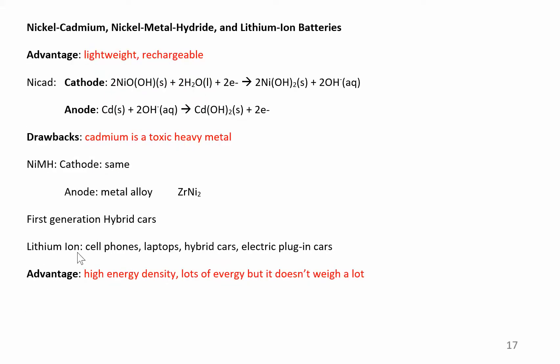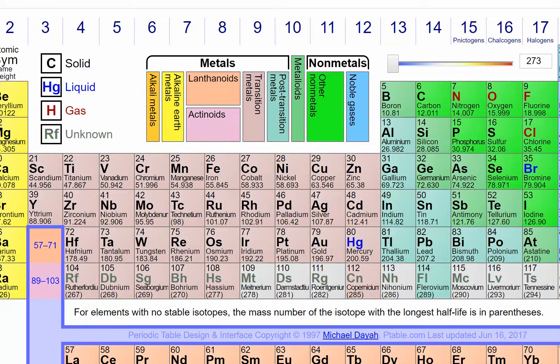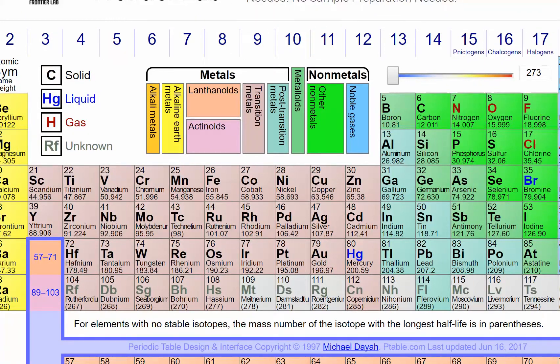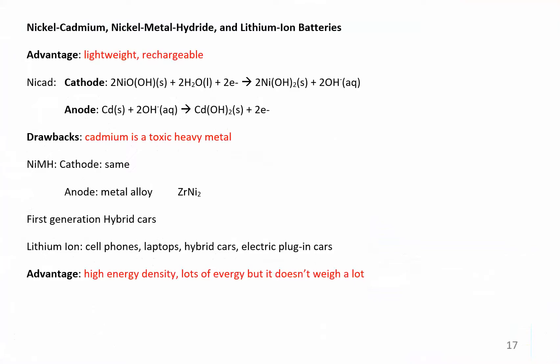Lithium ion batteries - advantages of them: they have very high energy density, which means you get a lot of energy but it doesn't weigh a lot. Lithium is really light. If you think about where lithium is in the periodic table, lithium is all the way near the top of the periodic table, so it's pretty light, it doesn't really weigh a lot.